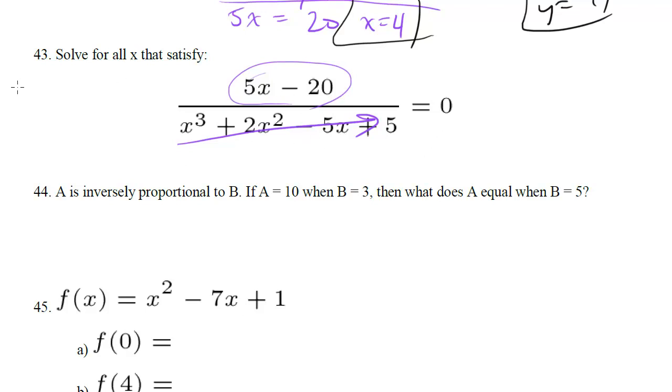So really all we care about is when does the numerator equal 0? Or when does 5x minus 20 equal 0? So we get 5x equals 20 or x is 4. So the answer to this one is just 4.